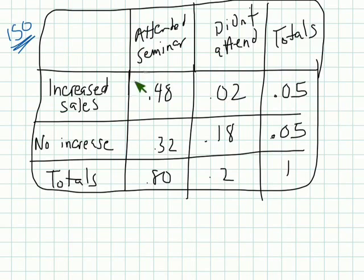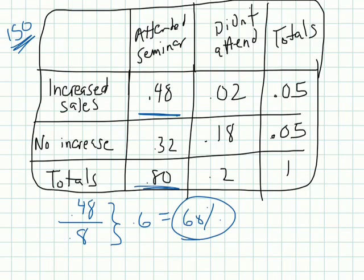And that is, what is this 0.48 over the total of this? So we have 0.48, that's the probability that they increased their sales, over the total probability, which is 0.8. And if you divide that, you would get 0.6, which means there is a 60% chance that they sold. Okay, good luck, and I'll see you in the next chapter.